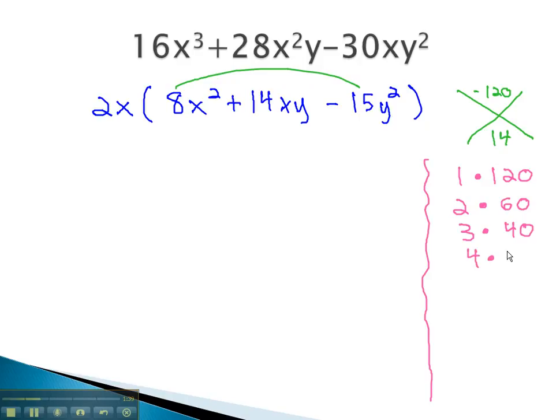4 goes into 120 30 times, and those also will not give us the 14. 5 goes into 120 24 times. However, that also does not give us the 14.